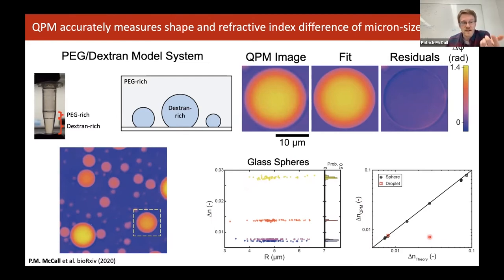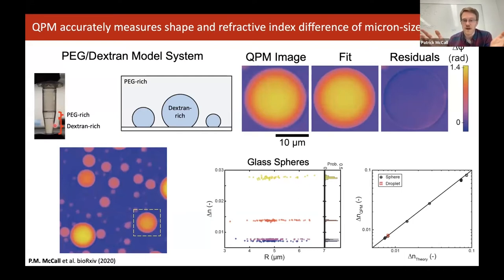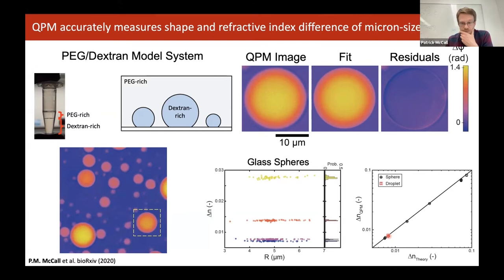We were able to show that the refractive index difference measured experimentally with quantitative phase images is in excellent agreement with what we could get from a refractometer. With a refractometer, you need hundreds of microliters of material — so for protein droplets, that was out of the question. But for PEG and dextran you can get hundreds of microliters, no problem. This is one of the few samples where we could actually quantitatively check that we're getting the right answer from our fitting.